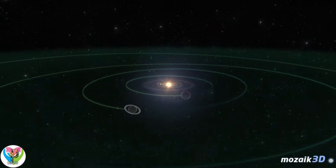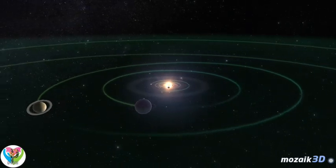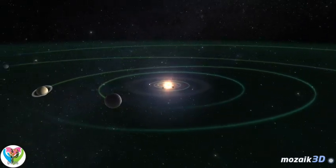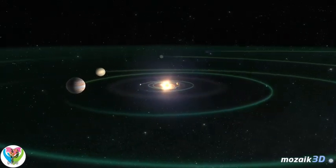On its border, the gravity of the Sun is equal to the gravity of the nearest stars. The solar system is completely filled with solar wind, a continuous flow of electrically charged particles emitted by the Sun.